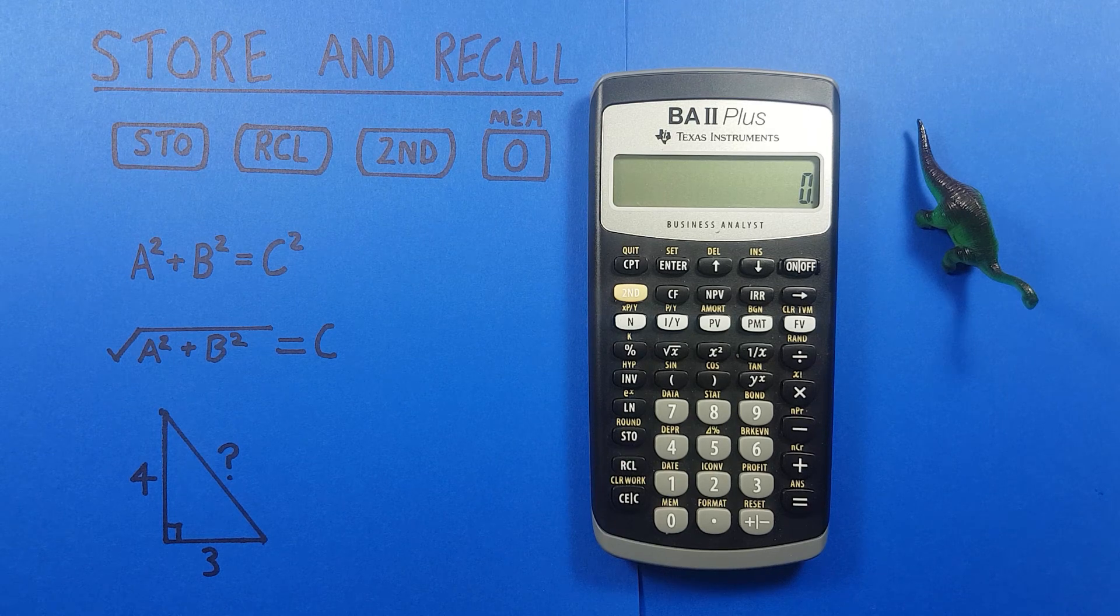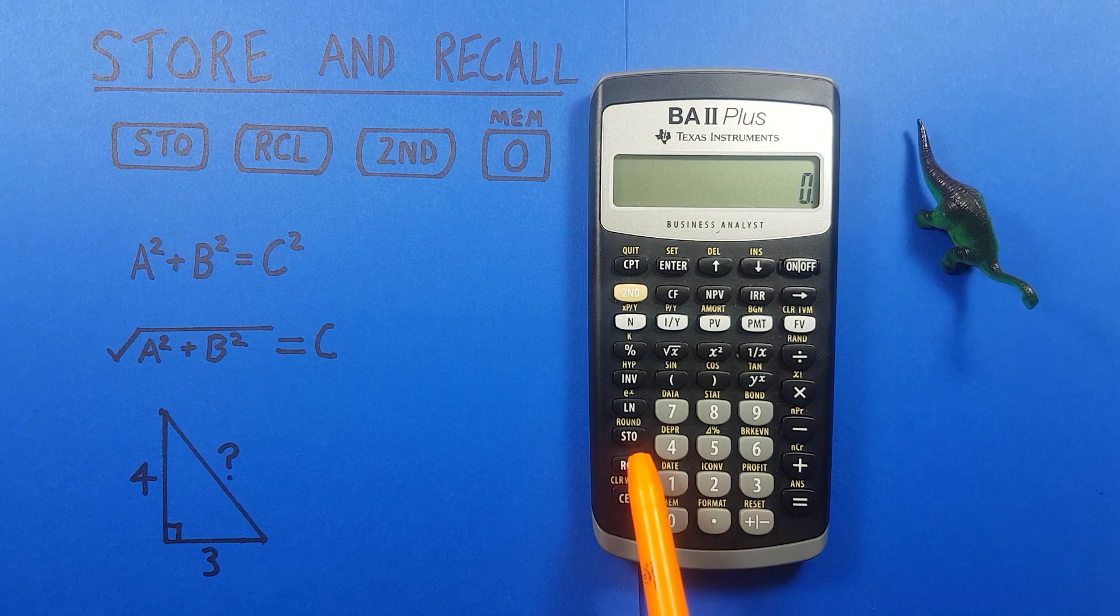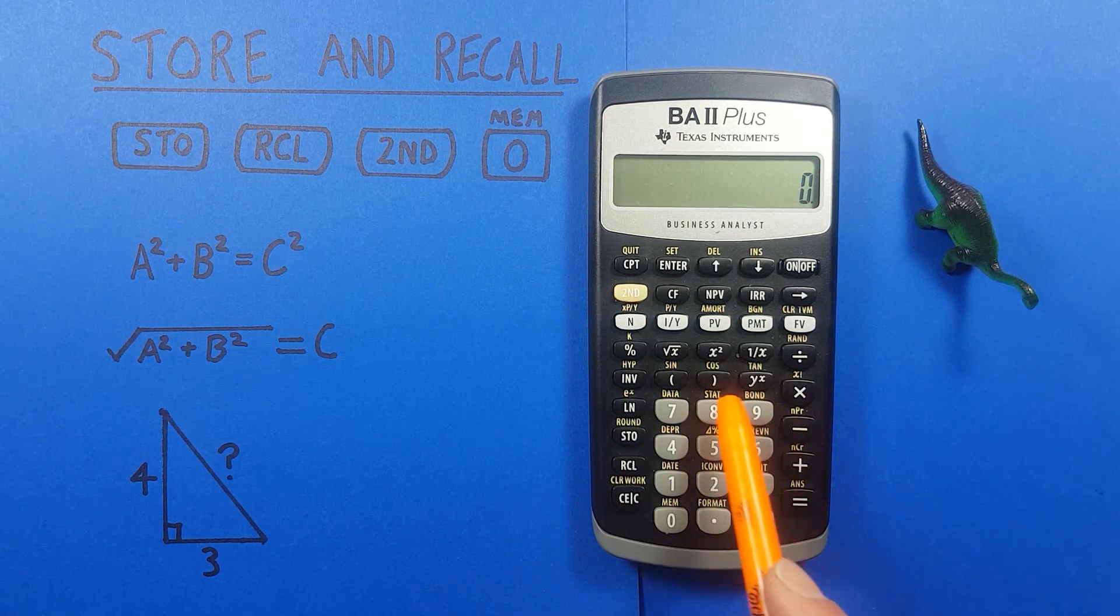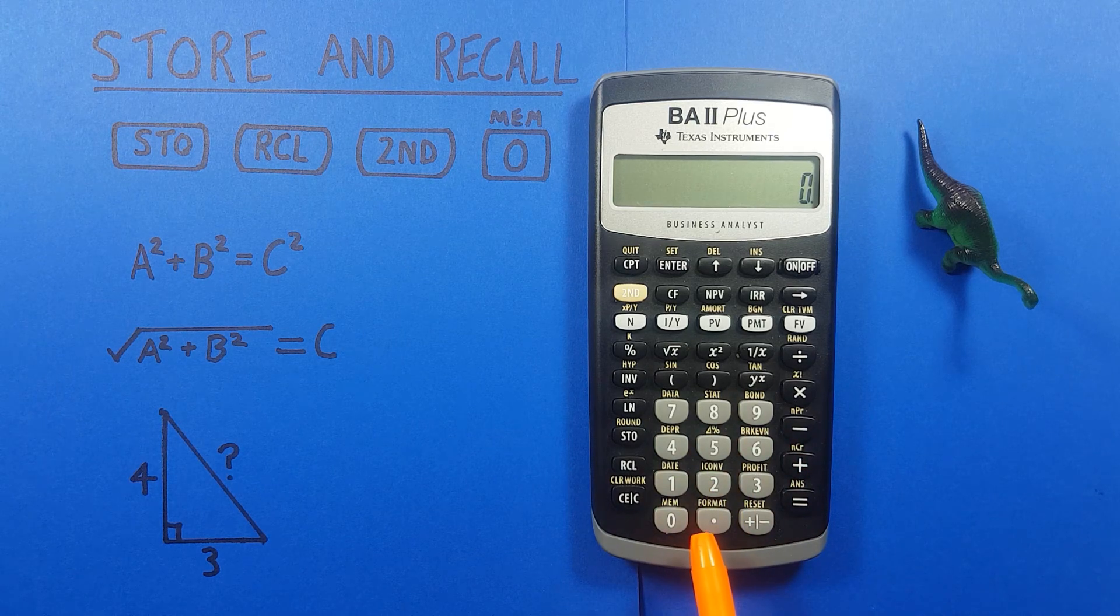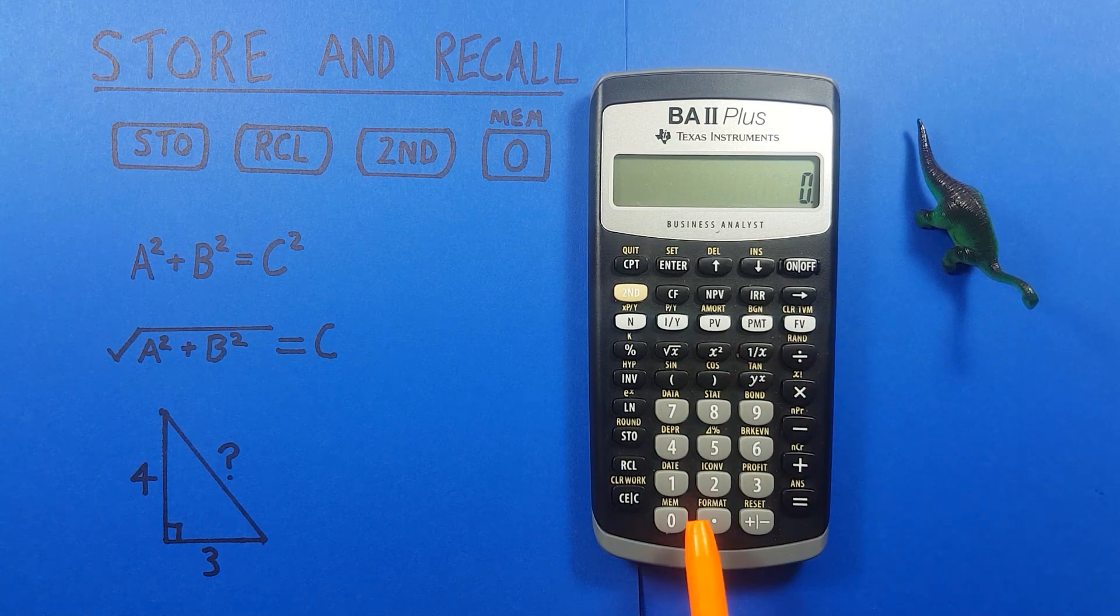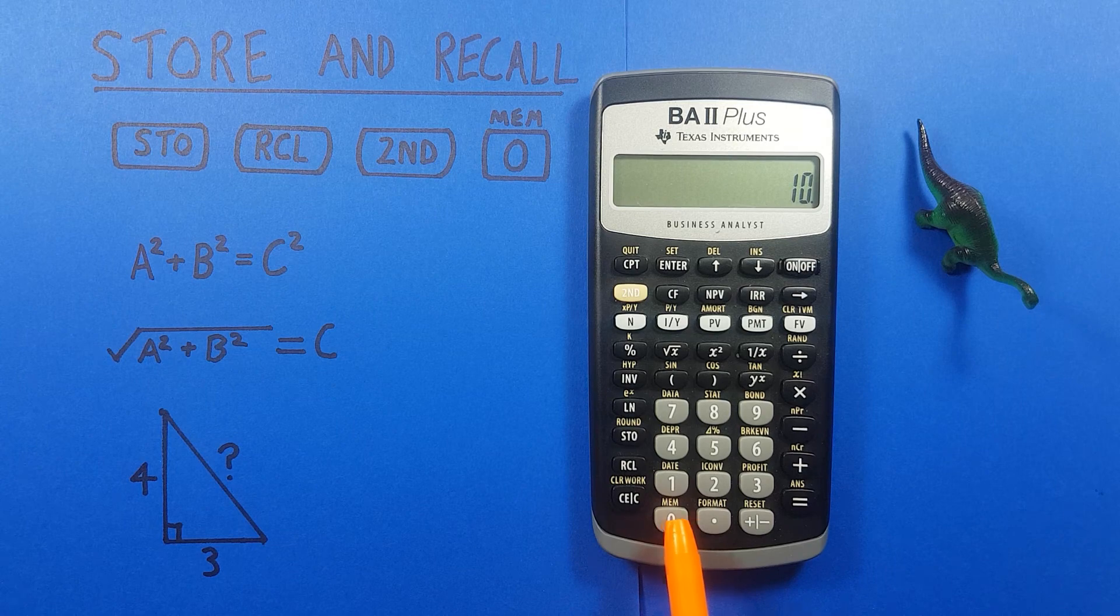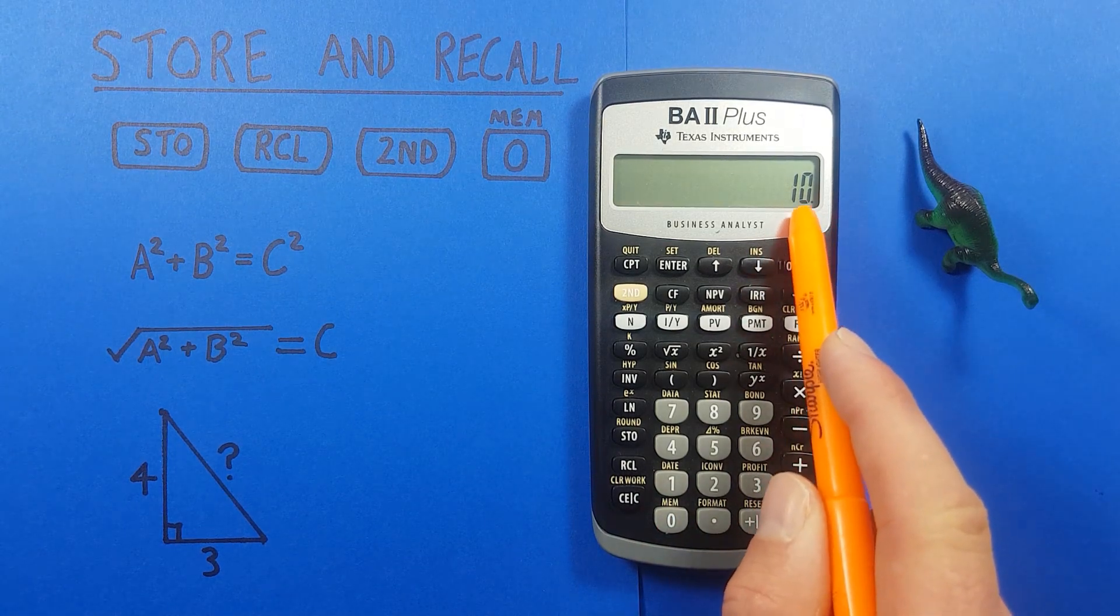Now if you want to recall a number from a memory slot, you press RCL, and then choose the slot you want to use. So let's recall that 10 from the first slot by pressing 0, and there we go, we see the 10 has appeared on our screen.